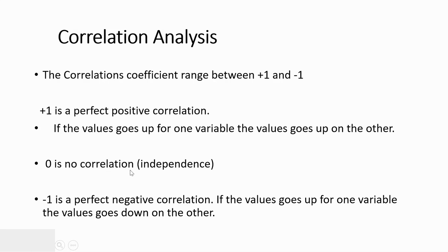If the equation provides minus 1, that is a perfect negative correlation. It indicates that if the value of one variable goes up, the value of the other variable goes down. This is how correlation analysis works. Now let us observe the example.